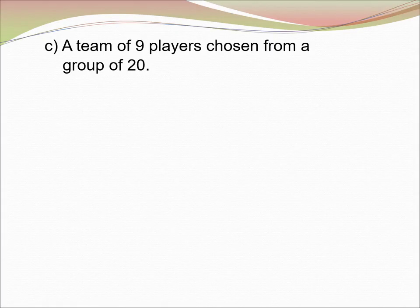(c) A team of 9 players chosen from a group of 20. We know that we want to choose 9 players. Either we choose player 1 and player 2 or player 2 and player 1 is the same. The order is not important. So, that is the case for combination.